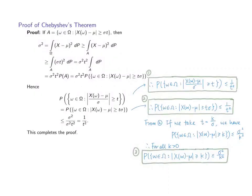Let's refer to the following proof. Let us denote by A the event that we are concerning, that is, the set that contains all elements in omega which satisfy that the absolute value of x(omega) minus mu is greater than or equal to sigma times t. We start with writing the variance sigma squared according to this formula, and since we are integrating this value with respect to p over the whole sample space, this value would be always greater than or equal to the integral of this expression with respect to p over just the set A — the event that contains elements which fulfills this inequality.